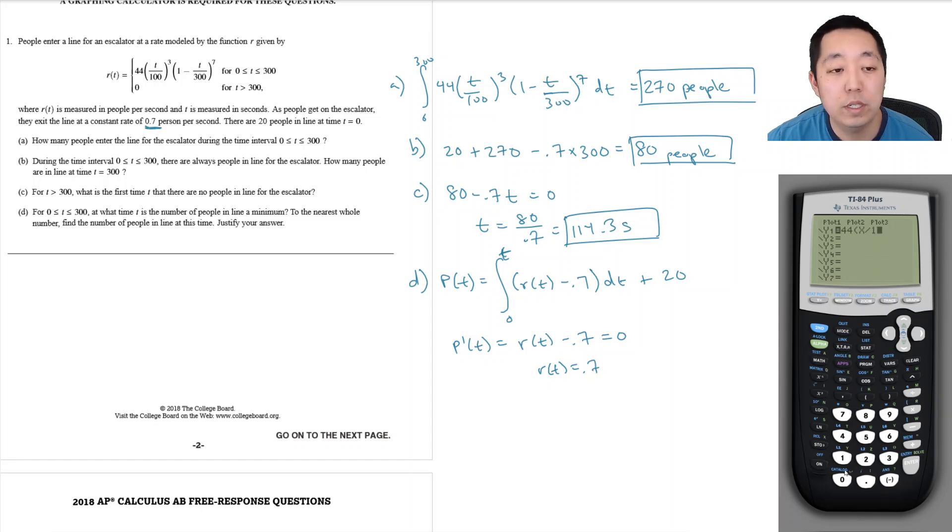I'll plot 44x divided by 100 cubed times (1 minus x divided by 300) to the seventh, then minus 0.7. I need to adjust the window from 0 to 300 on the x-axis and maybe 0 to 10 on the y-axis.